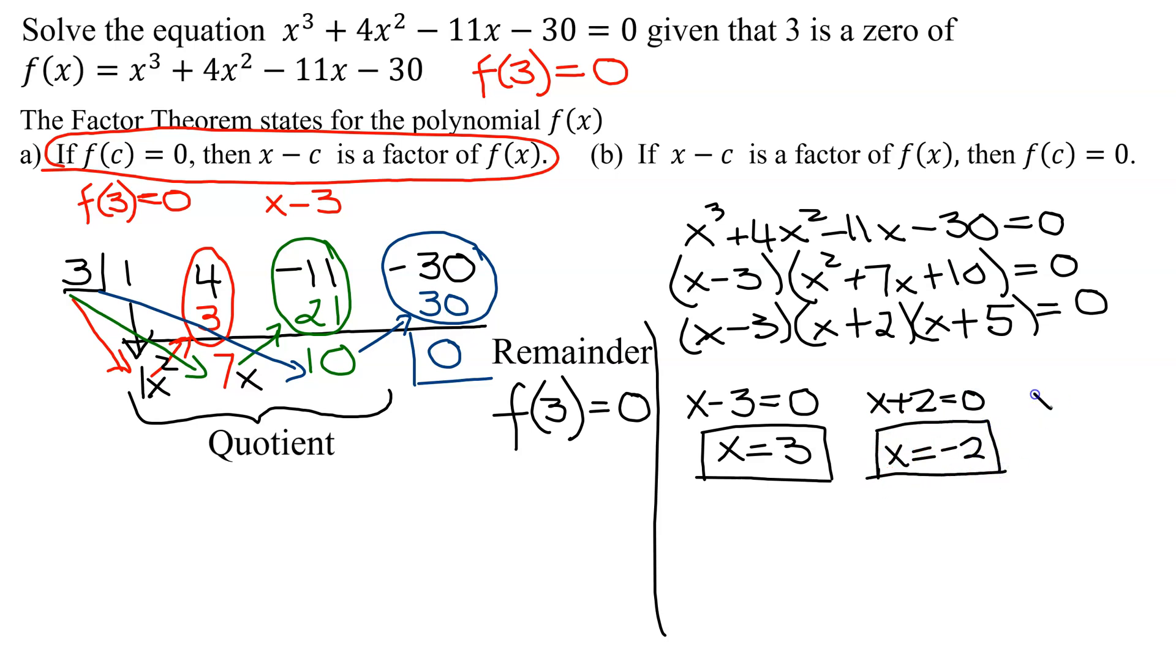And setting the last factor x + 5 equal to 0. Subtract 5 from both sides, you get x = -5. So there are the three solutions to this polynomial equation.